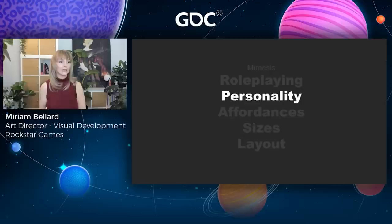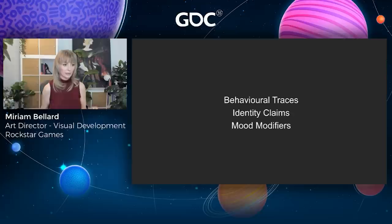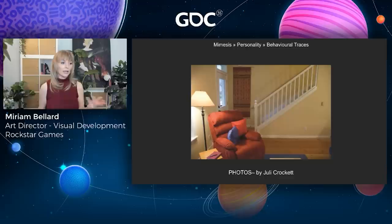Next, under mimesis, we have personality. This book by an environmental psychologist talks about how your personality is portrayed in a space. He discusses behavioral traces, identity claims, and mood modifiers. Behavioral traces are the traces you leave behind in an environment as you use it — things like mess and clutter, but also things like a couch or a chair under a window or next to a lamp because somebody is using it to read or to write.